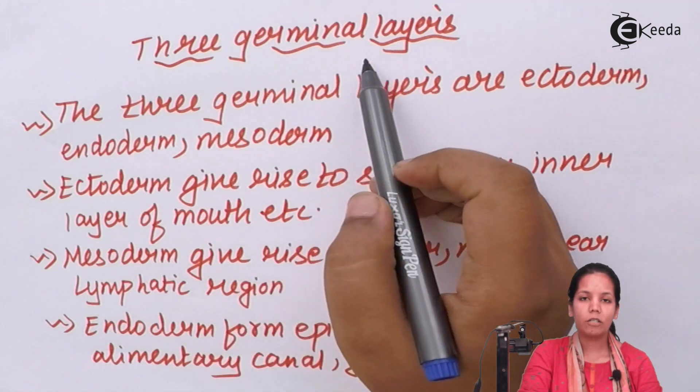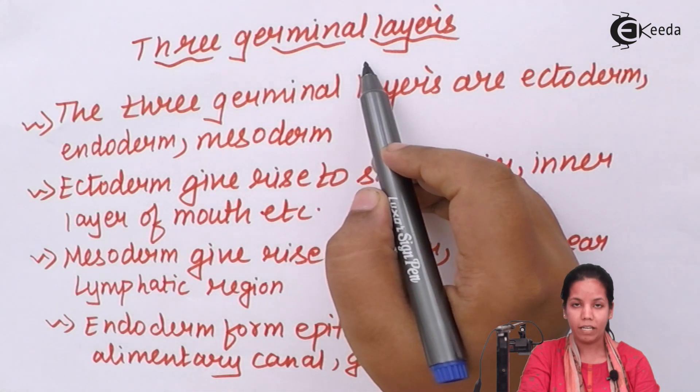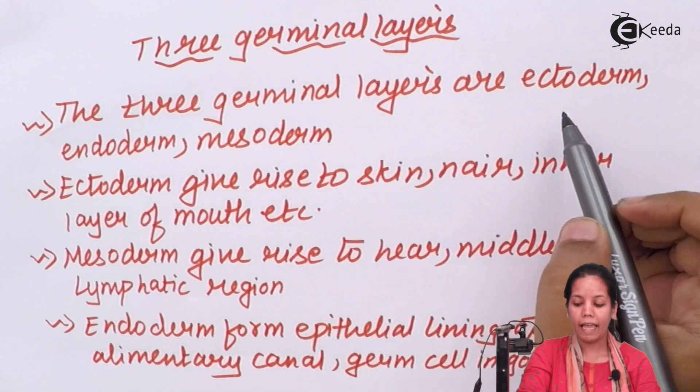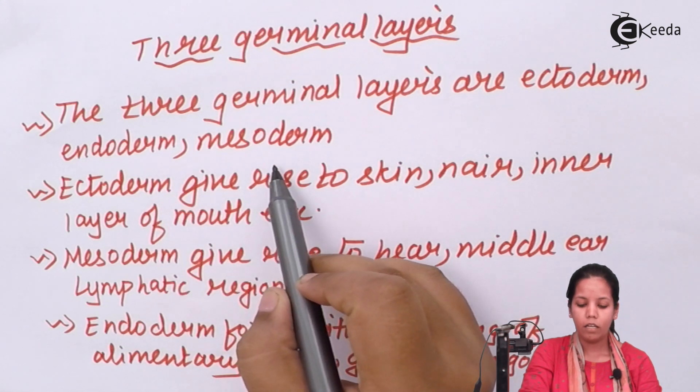The three germinal layers or germ layers present inside a human being are the ectoderm, endoderm, and mesoderm.